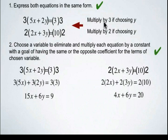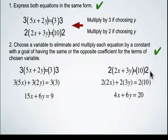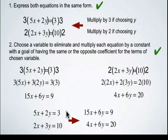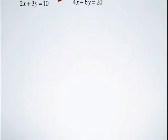We've now multiplied both equations by constants — note they don't have to be the same constant, but you must multiply both the left side and right side of each equation by the same value: both sides by 3 for the first, and both sides by 2 for the second. This gives us 6y in both equations — identical coefficients on our y term — so we can now use that to solve.